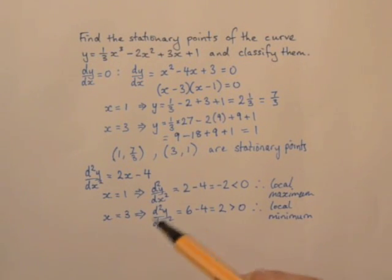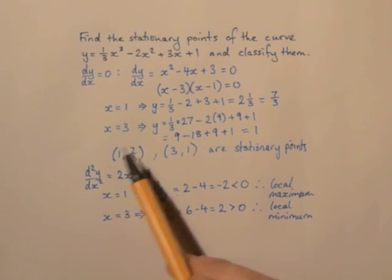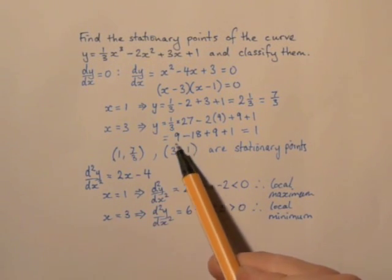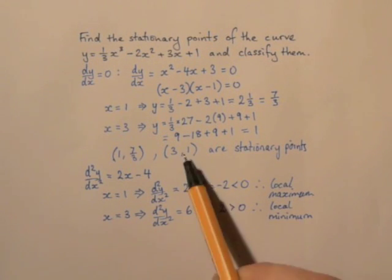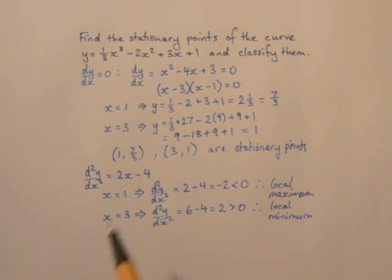So we found the two stationary points, and the first one, when x is one, is a local maximum. The second one, when x equals three, is a local minimum.